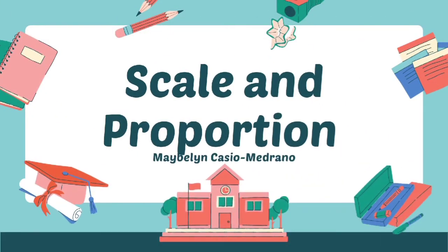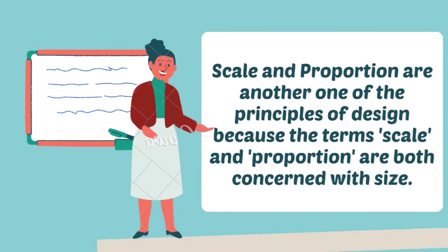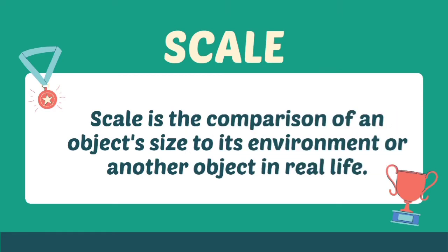Hello everyone, today we are going to learn about scale and proportion in art. Scale and proportion are two of the principles of design because both terms are concerned with size. Scale is the comparison of an object's size to its environment or another object in real life.